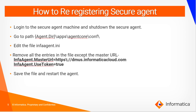How to re-register a secure agent: log on to the secure agent machine — the server where the secure agent is currently hosted — and shut down the secure agent. Navigate to the secure agent installation directory, apps, agent code, and conf directory. Here you will find the infra-agent.ini file. Open this file and remove all the entries except the master URL and the use token value which is set to true. Save the file and restart the secure agent.